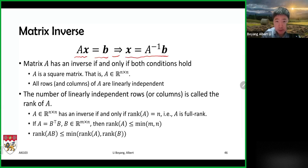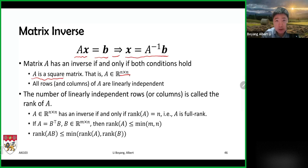We can do that only when the inverse of matrix A exists, and it exists if and only if two conditions hold. Number one: A must be a square matrix, so the number of rows and columns must be identical — let's say they're all n dimensions. Number two: all the rows are linearly independent, which implies the columns are also linearly independent.